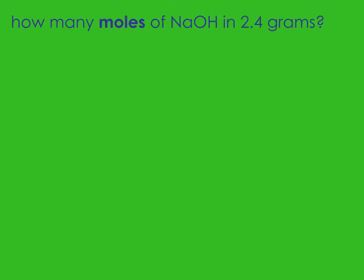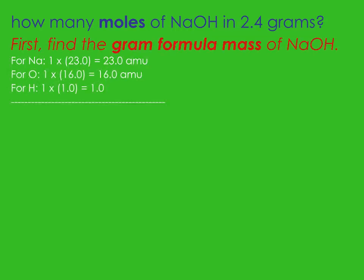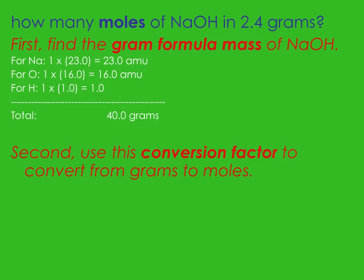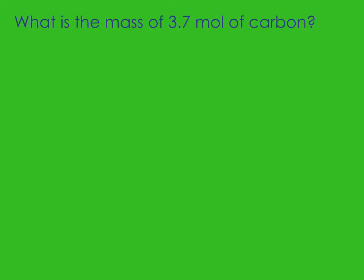You'll do the same thing here: first find the atomic mass or gram formula mass. Our total for NaOH is 40, and then you use your conversion factor. To convert from moles to grams, you do the opposite — instead of dividing, you multiply.